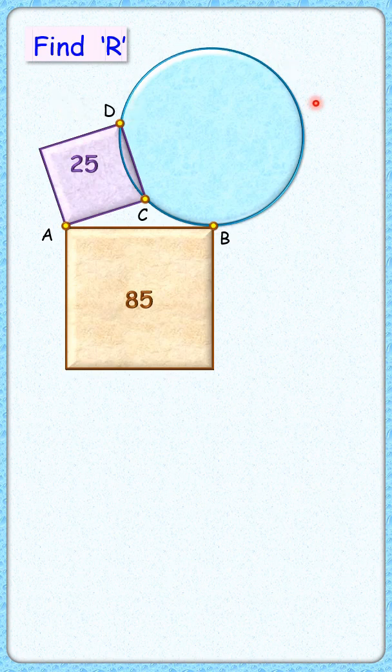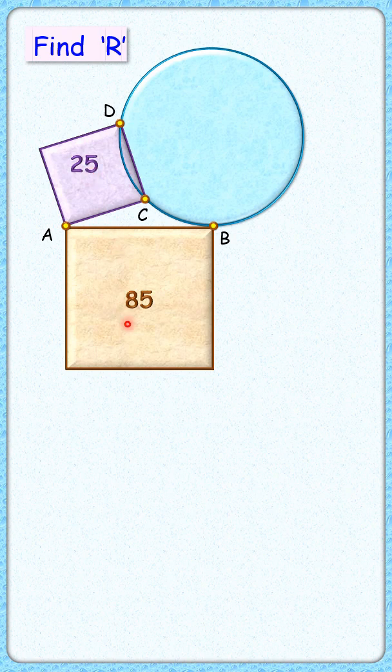Can you find the area of this circle where the given areas of these two squares are 25 and 85 centimeter square? Let's check the solution.